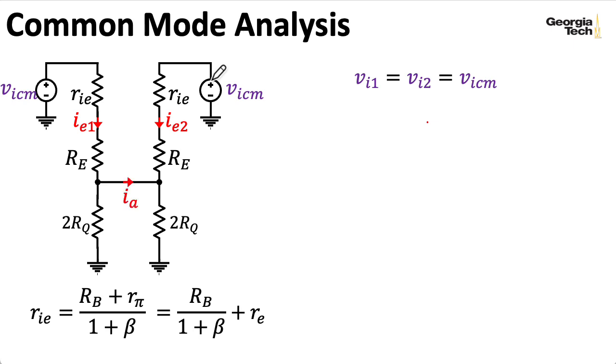So making that substitution, let's think about what the current flowing through this branch here is. Let's once again apply superposition. If I were to short out the source on the right to focus on the effect of the source on the left, I would see that there would be a current induced flowing this way. Now, if I were to short out the source on the left to focus on the effect of the source on the right, I see I would get a current of the same magnitude flowing this way. And those two currents would wind up canceling each other out in the superposition. So IA here is actually equal to zero. There's no current flowing through here. That means that IE1 flows all the way down here through 2RQ.